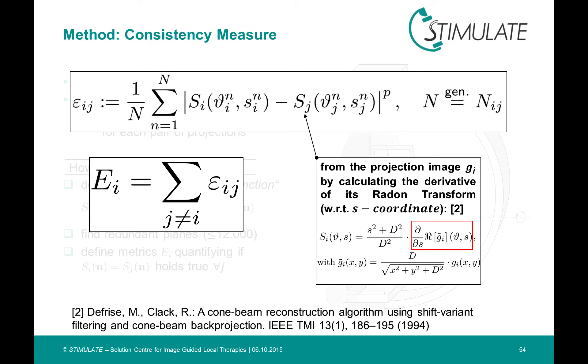You can see in the formula on the right, that you basically have to calculate the 2D radon transform of the projection images, denoted with R. And afterwards, you just have to differentiate it and do some weighting. We can do this as a preprocessing step, by an appropriate sampling of the intermediate function.